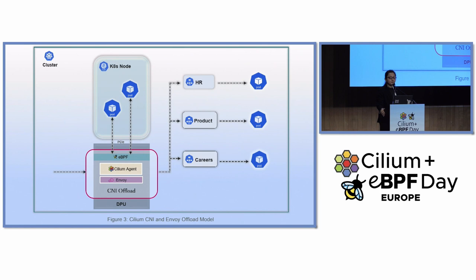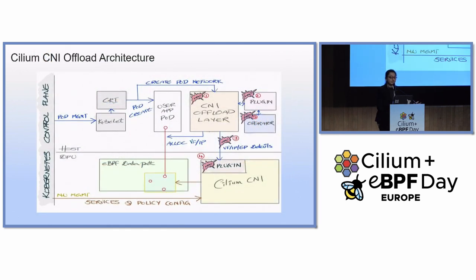After that, we were able to come up with the complete offload architecture where your Cilium agent, eBPF data path, and the Envoy proxy can all be deployed — or offloaded — to the data processing units. This is the detailed diagram of the full primary network offload to DPU. We have introduced some plugins to transparently offload all the components, with no changes to the Kubernetes or pod spec.